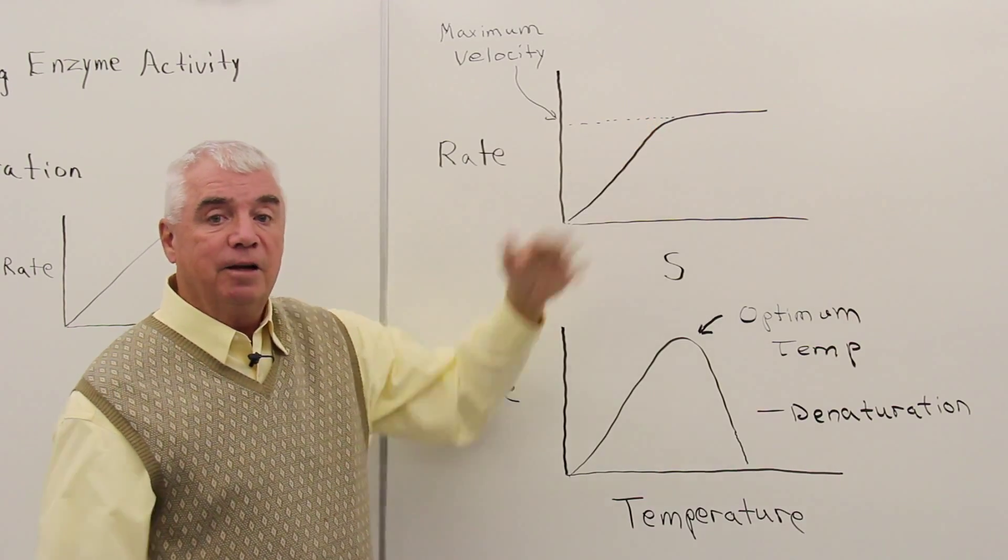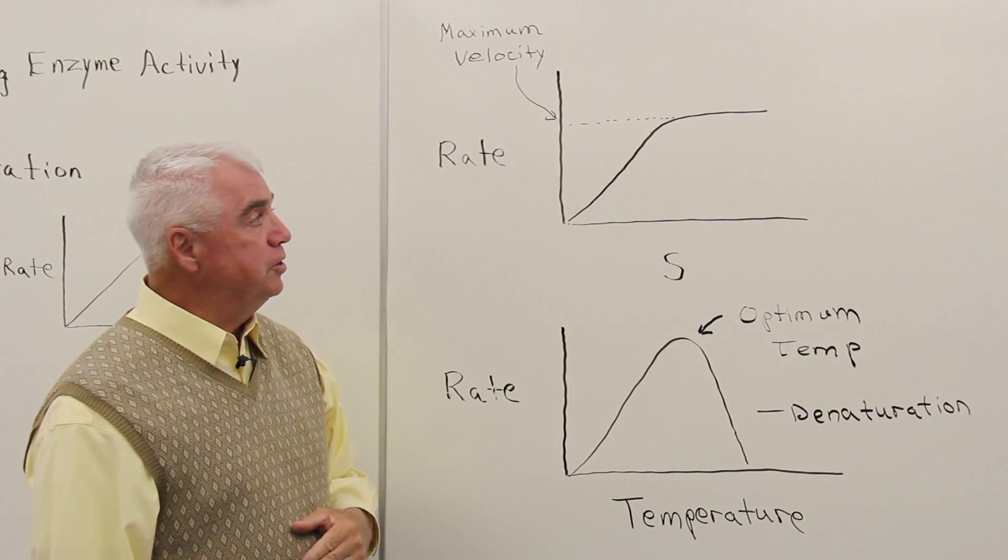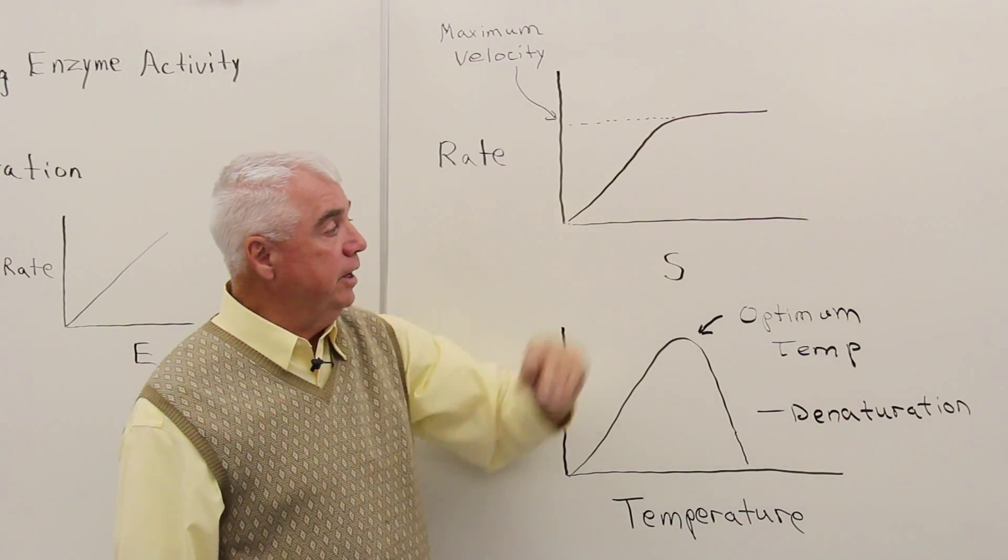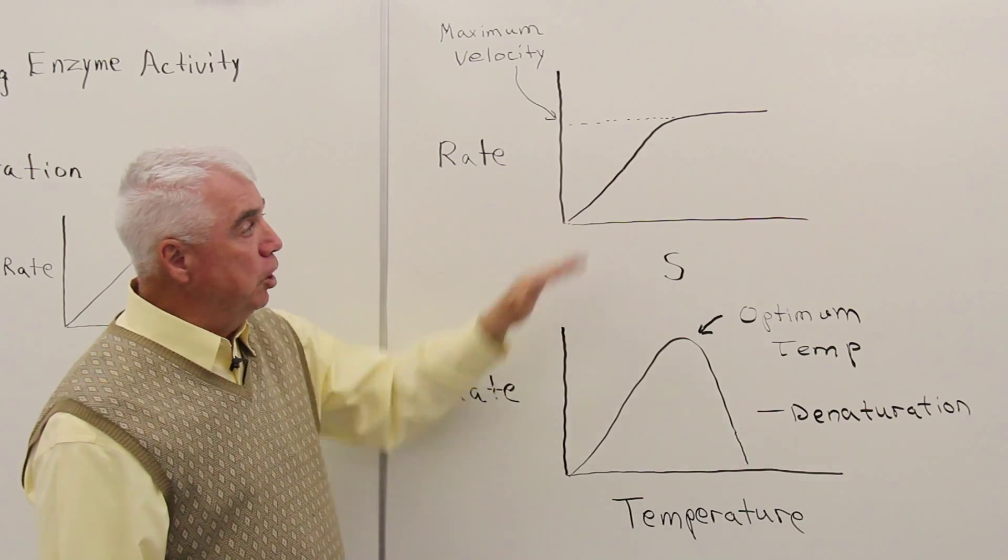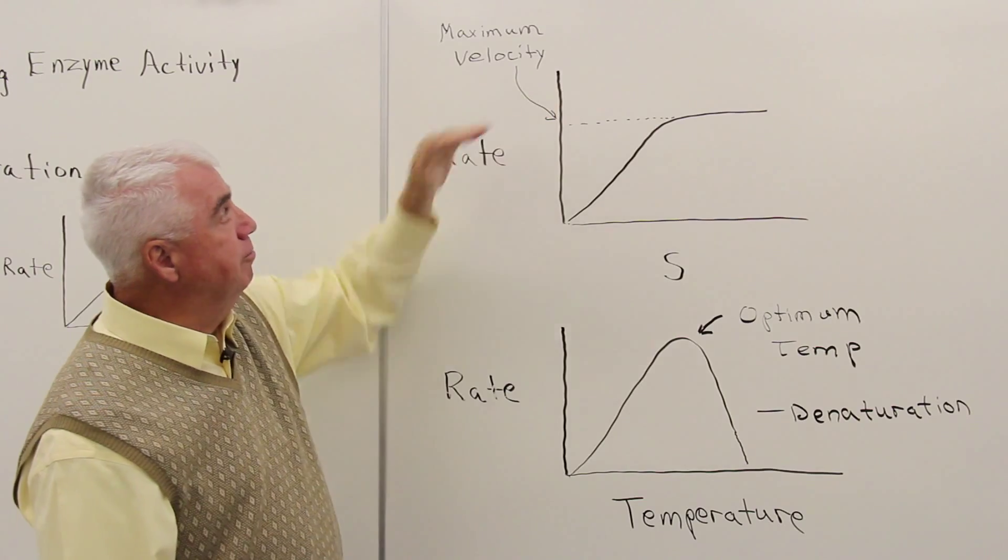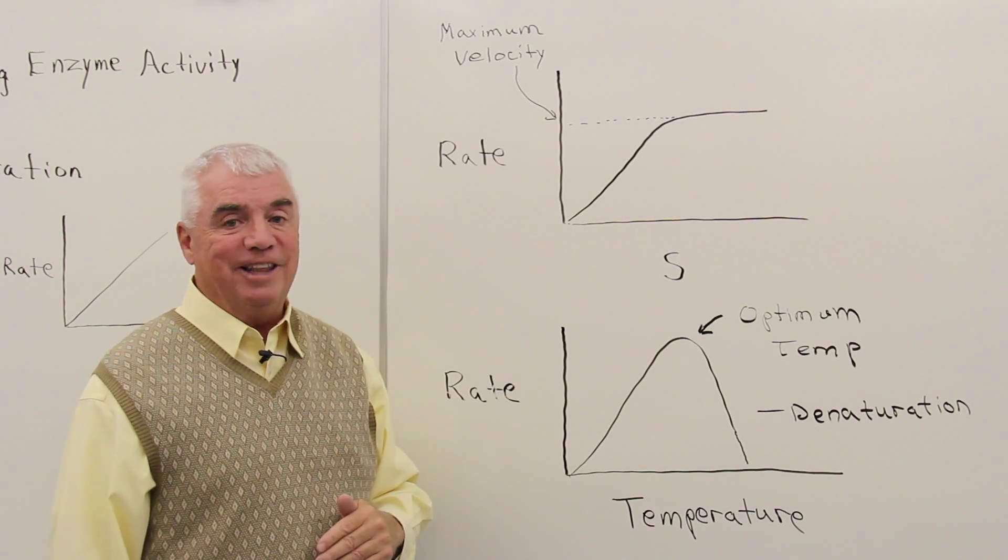Well, you might expect that, because enzyme and substrate are coming together and producing product. But what we find is that the curve reaches a maximum. The curve slopes off, or plateaus, and we've reached some sort of maximum velocity at that point. How can we explain that?